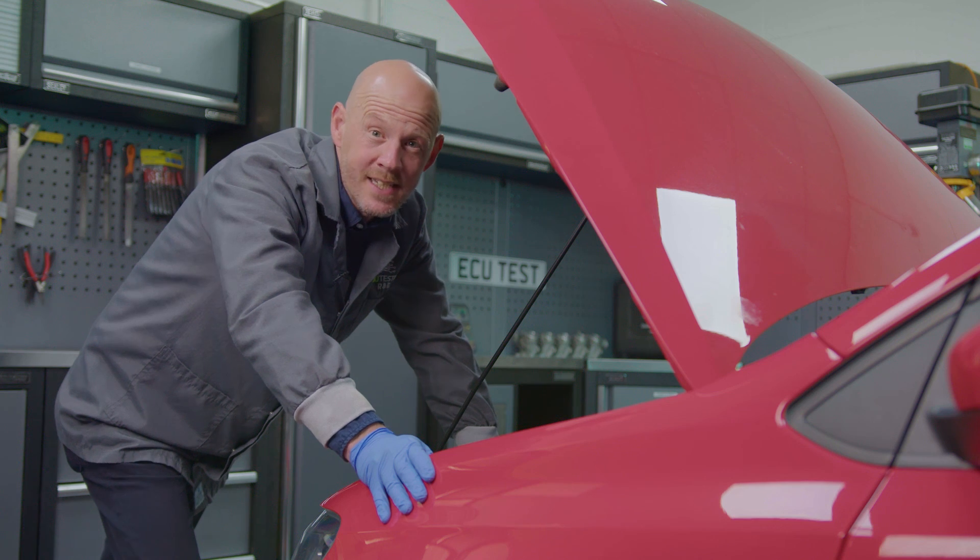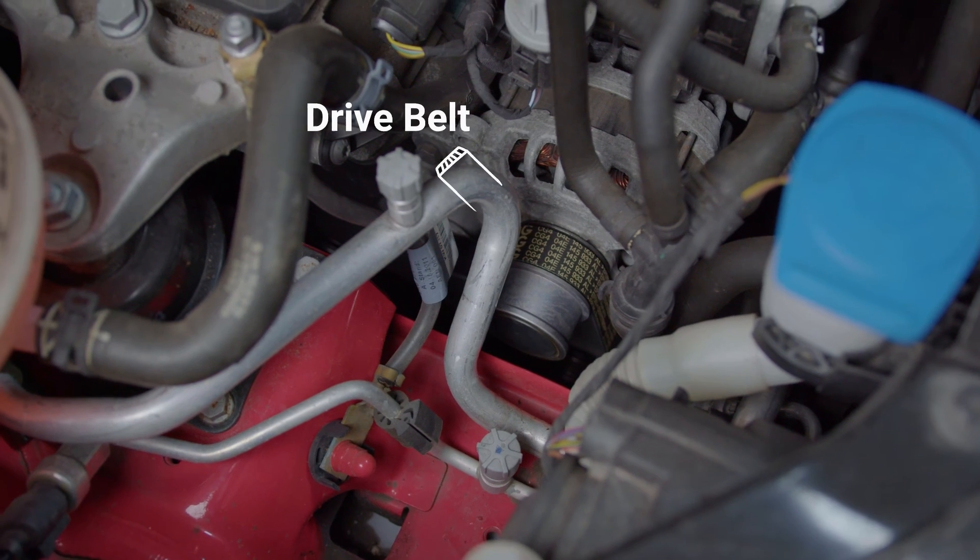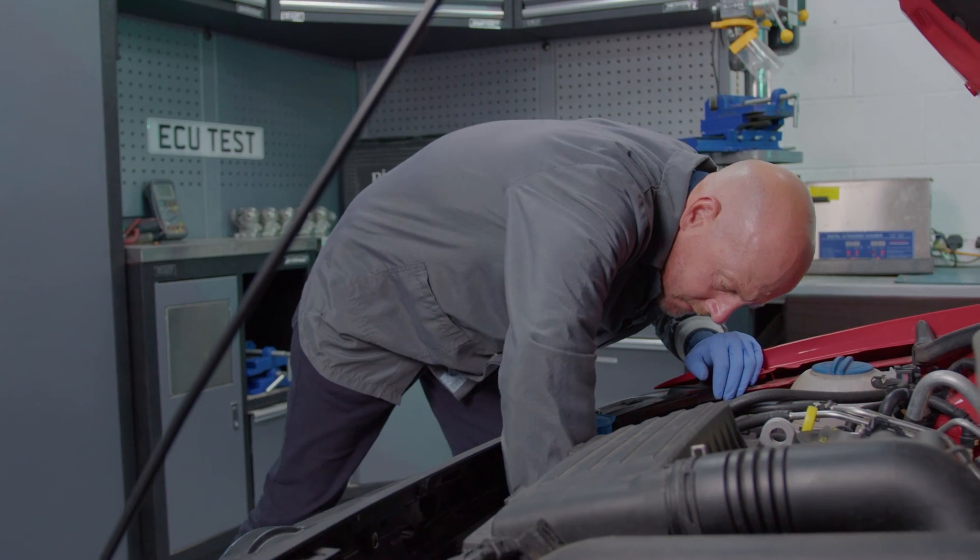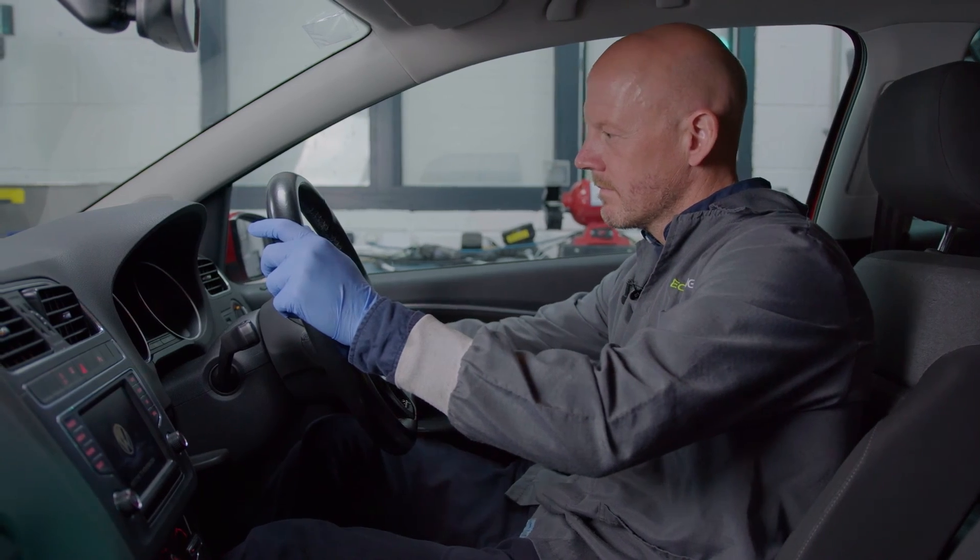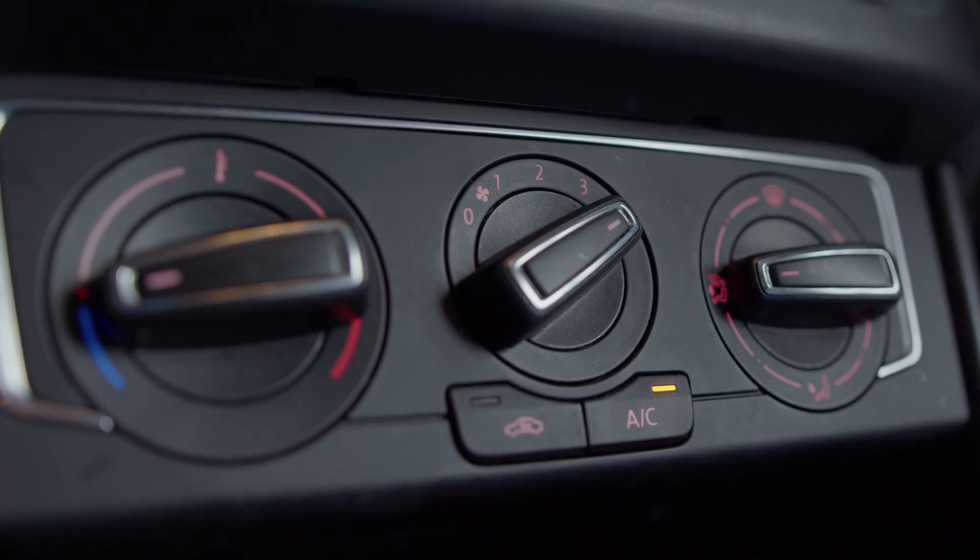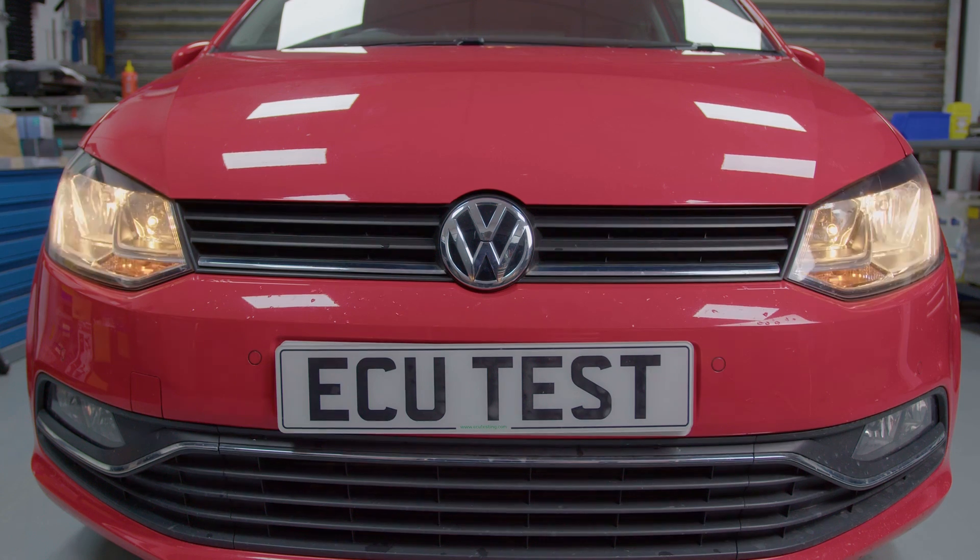If the battery checks out okay then check the drive belt for any damage or slack in tension. If it looks good then start the car and turn on as many accessories as you can such as the radio, heater, AC and headlights.